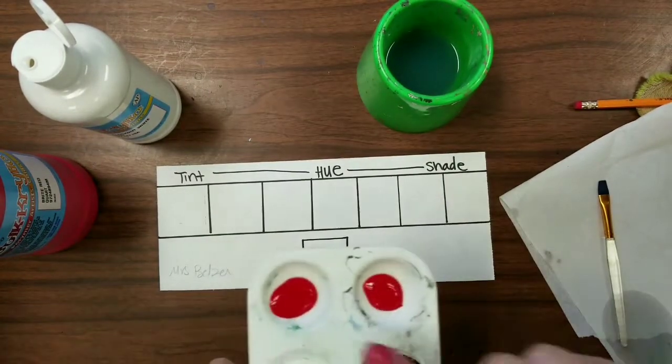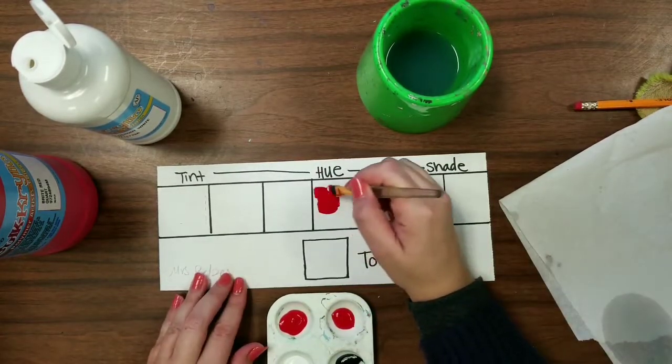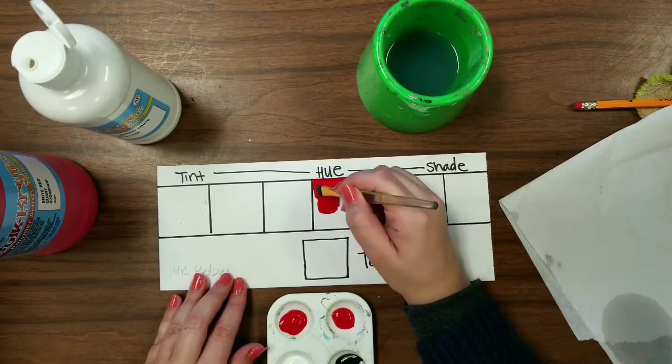To get started, we'll take some of our red and put it in the center. That is our hue or our original color.